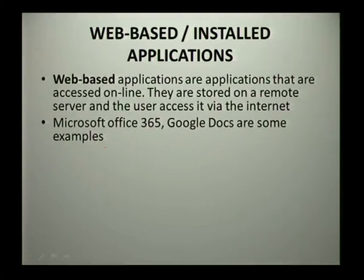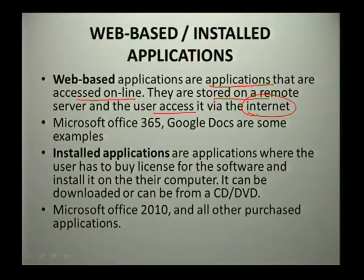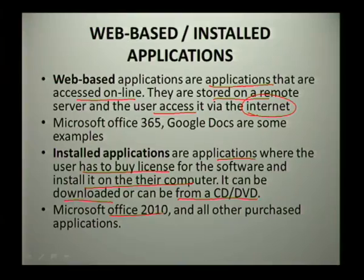Web-based applications are applications that are accessed online. These applications are stored on a remote server and the user accesses them via their internet connection. Examples include Microsoft Office 365 and Google Docs. Installed applications are applications where one has to buy a license and then install it on their computer. This software can be downloaded or obtained from a CD or DVD — for example, Office 2010.